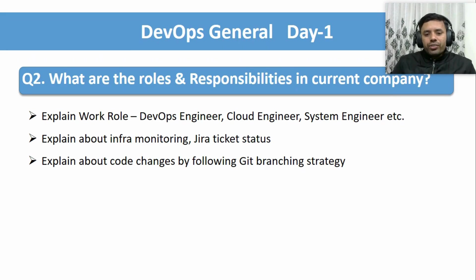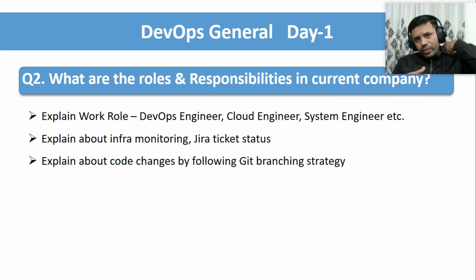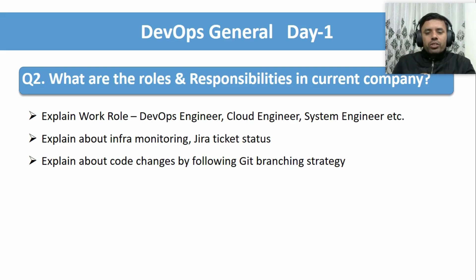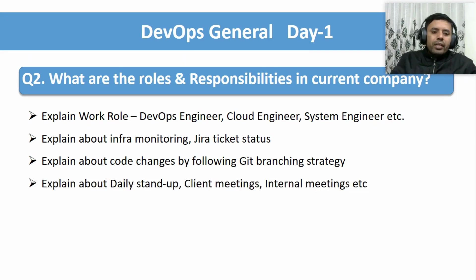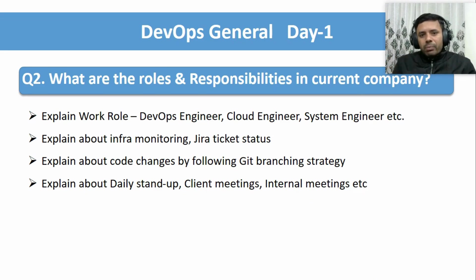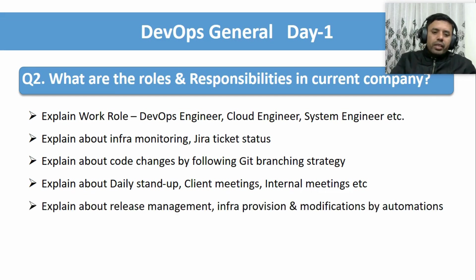You can also explain about code changes by following the Git branching strategy. When working on real-time projects, we don't directly modify code changes to the master branch; we follow the best branching strategy. We'll cover branching strategy in detail in the Git questions section, but for now just mention that you follow Git branching strategy for code changes. You can also explain about daily stand-ups — attending daily stand-ups, internal client meetings, and meetings with different stakeholders and teams.